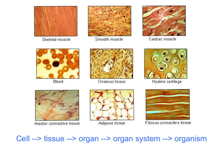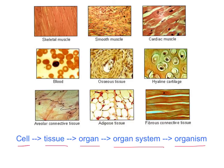When those genes specialize is when we get tissues. We start off with cells — in the human case, we start off with unspecialized stem cells. As they specialize and we get groups of specialized cells, then we get a tissue, an organ. Your organ is your groups of tissues. Your organ system is your groups of organs, and your organism is your groups of organ systems.